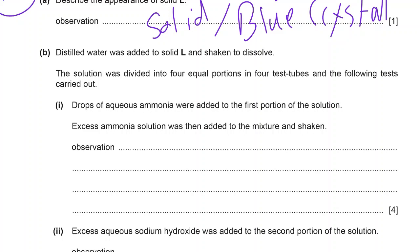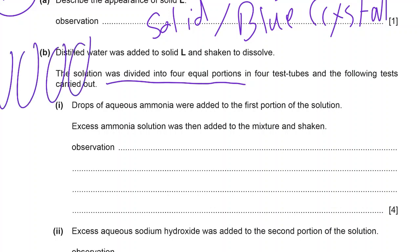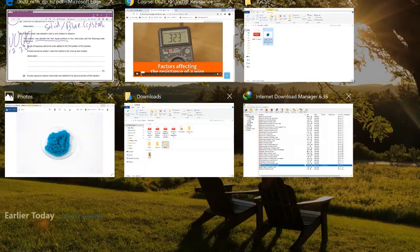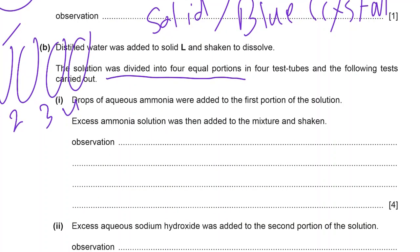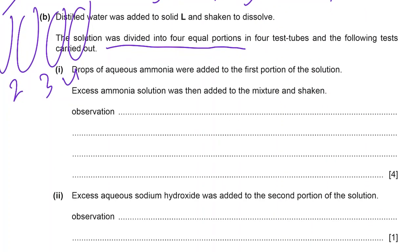In question B, you are going to dissolve this copper chloride in water, shake it to make sure all the solid is dissolved completely. Then this solution was divided into four portions — four test tubes. In test tube one, drops of aqueous ammonia were added to the first portion of the solution, then excess ammonia solution was added and shaken. So you need to write two observations.